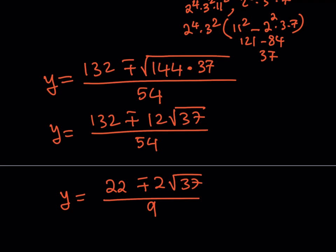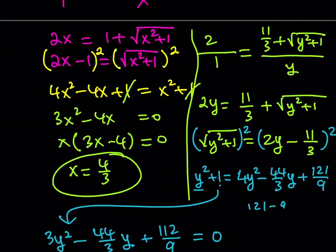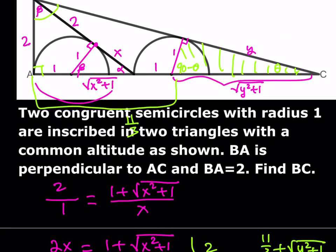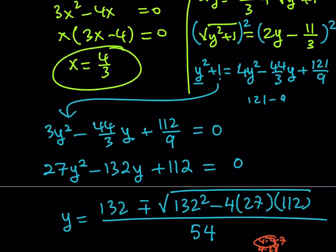You might be wondering which solution to use. The square root of 37 is about 6, so 2 times 6 is about 12. The plus version gives roughly 34/9, which is close to 4, and the minus version gives about 10/9, close to 1. Since y is definitely greater than 1 from the picture, we take the positive version: y equals (22 plus 2 root 37) over 9.